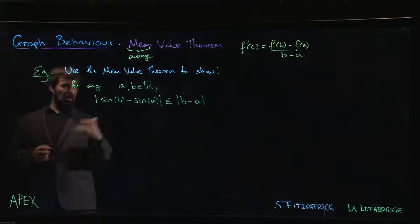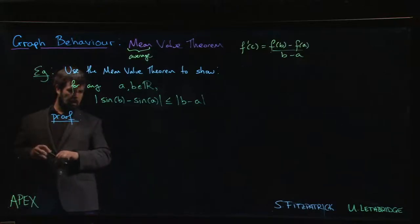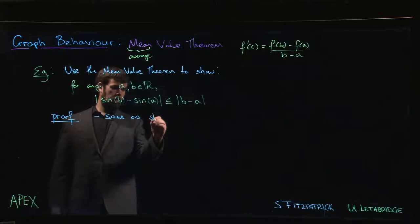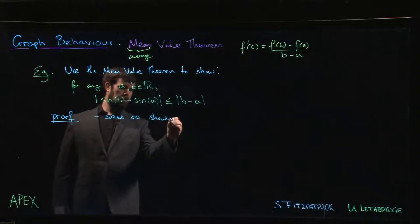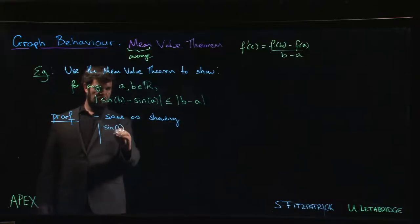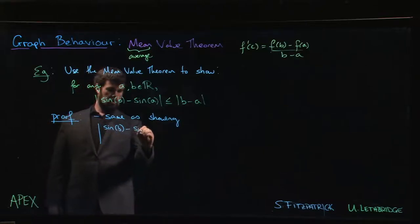How do we establish this fact? The first thing we might notice is that this is the same as showing that the absolute value of sin(b) minus sin(a), divided by the absolute value on the right—we can divide by a positive